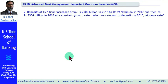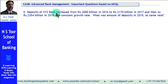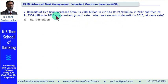Let us now go to question number 5. Deposits of XYZ Bank Limited increased from 2000 billion in 2016 to 2170 billion in 2017, and thereafter to 2354 billion in 2018 at a constant growth rate. What was the amount of deposits in 2015 at the same growth rate? We are given deposits for 2016, 2017, and 2018, and we need to find 2015 using the same constant rate.